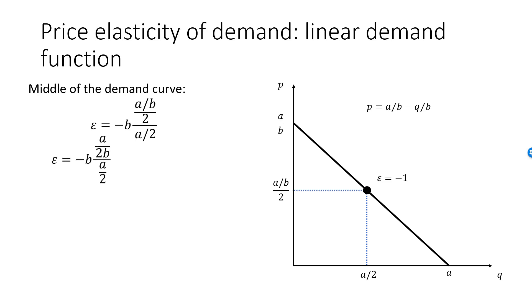To simplify this, remember the formula for the ratio of two fractions. We get minus B times A over 2B multiplied by the inverse of the denominator, 2 over A. The A's will cancel, the B's will cancel, and the 2's will cancel, leaving us with just minus 1.